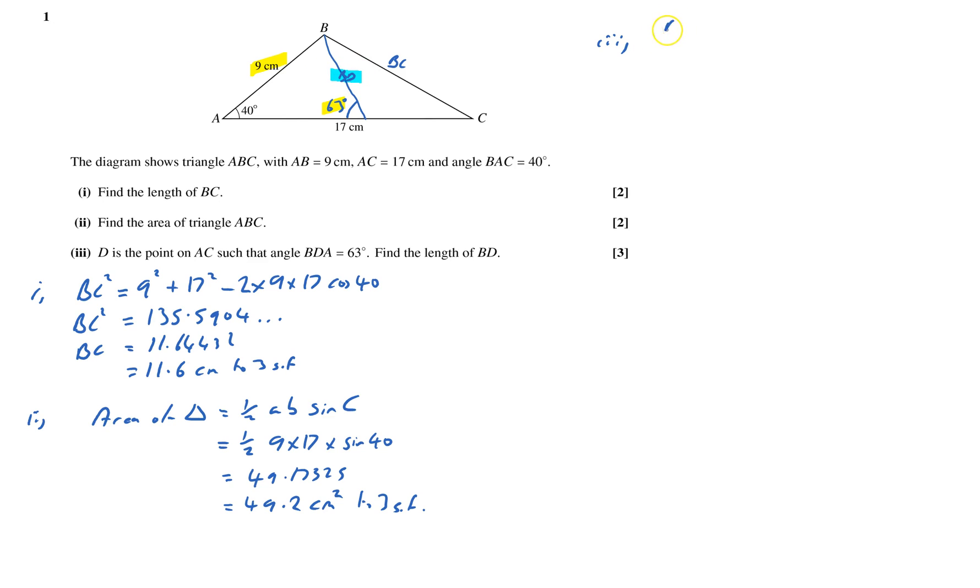So if I put in there BD. And so the length, the unknown is what I'm going to start with. So BD over sine 40 equals, and it's going to be over sine, so it's going to be a length on top, 9 over sine 63. And so BD equals 9 over sine 63 times by sine 40.